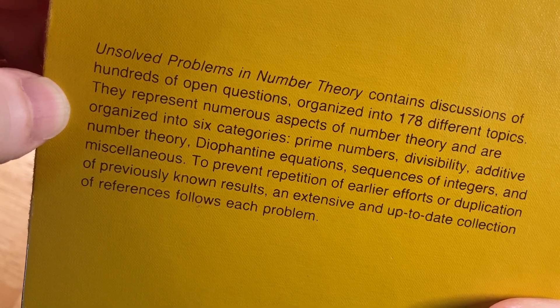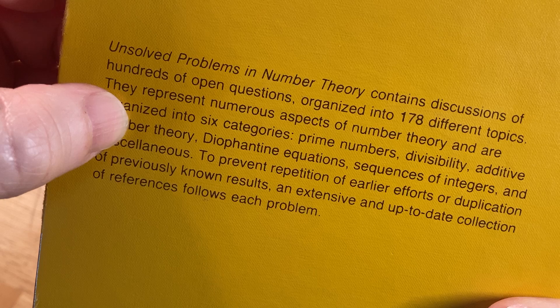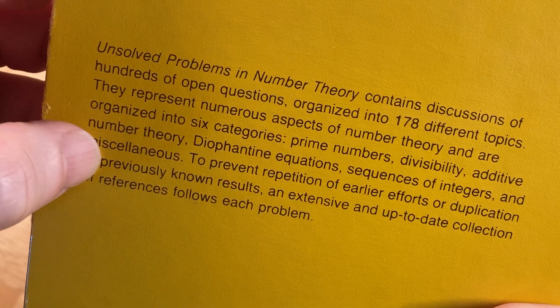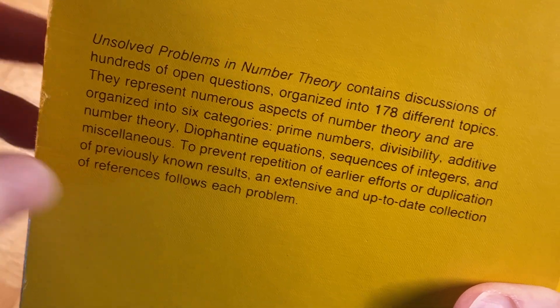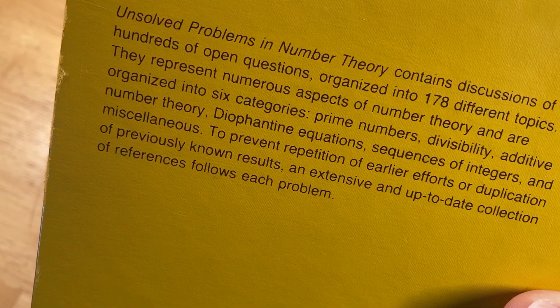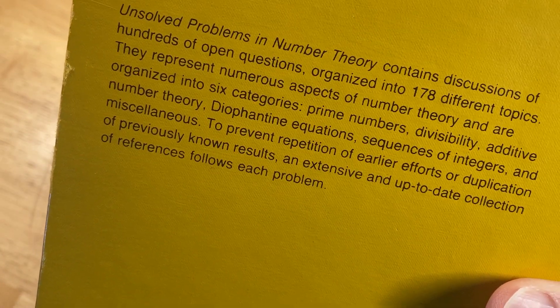They represent numerous aspects of number theory and are organized into six categories. Prime numbers, divisibility, additive number theory, diophantine equations, sequences of integers, and miscellaneous. To prevent repetition of earlier efforts or duplication of previously known results, an extensive and up-to-date collection of references follows each problem.